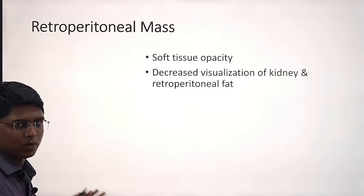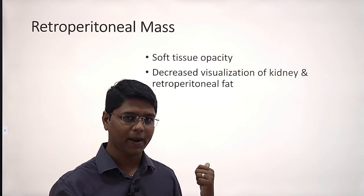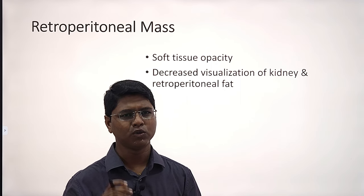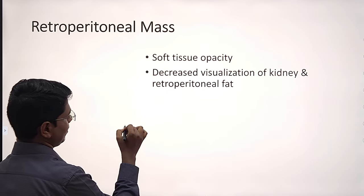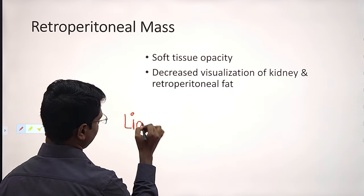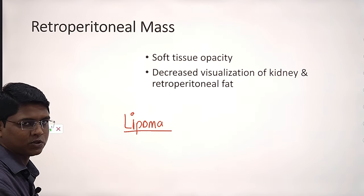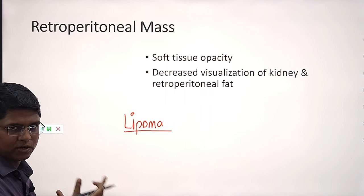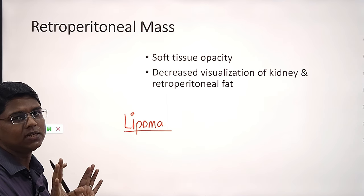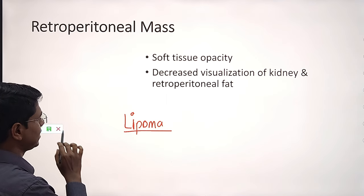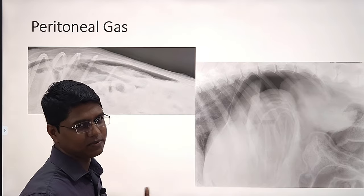Retroperitoneal mass is also uncommon, but you may find it. Most commonly you will find a lipoma. When there will be mass, it is of soft tissue opacity. Under the fat opacity of the retroperitoneal fat which provides contrast, you will find some soft tissue opacity — basically the retroperitoneal mass.